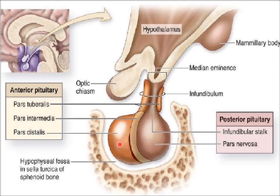The anterior pituitary, also known as adenohypophysis, and the posterior pituitary, which is known as neurohypophysis. The neurohypophysis is attached with the part of the diencephalon — the median eminence of the hypothalamus — through a stalk known as the infundibulum. This infundibulum, also known as the neural stalk, connects the posterior pituitary gland to the median eminence of the hypothalamus.